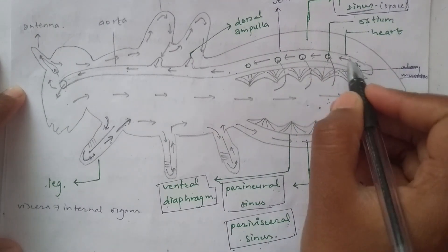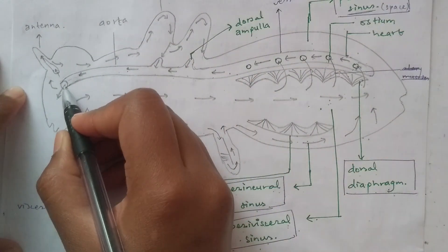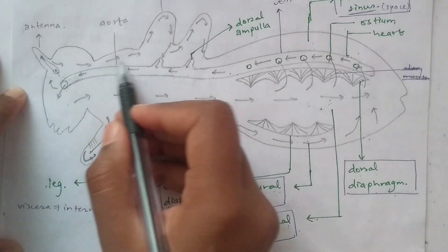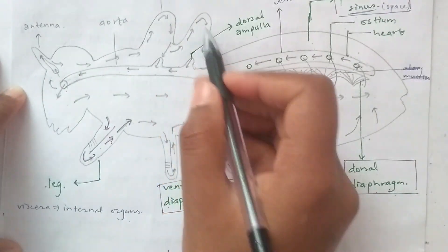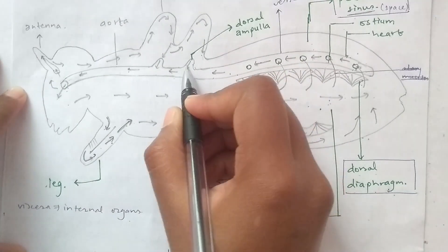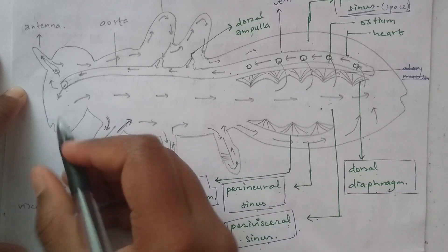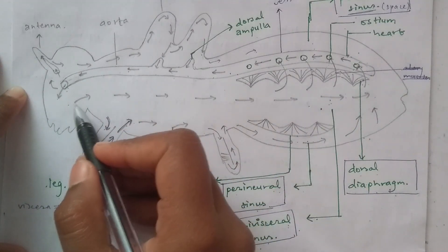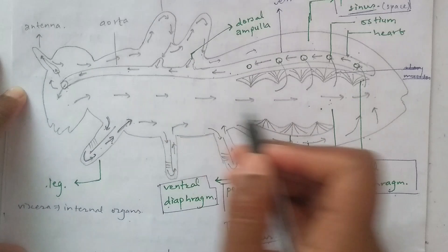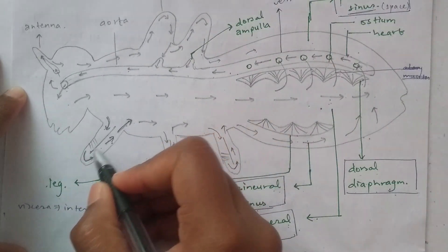Hemolymph flows into the head and into the wings. The impure blood flows in both the anterior and posterior positions. In the case of insects, a longitudinal septum creates bi-directional flow in the legs.